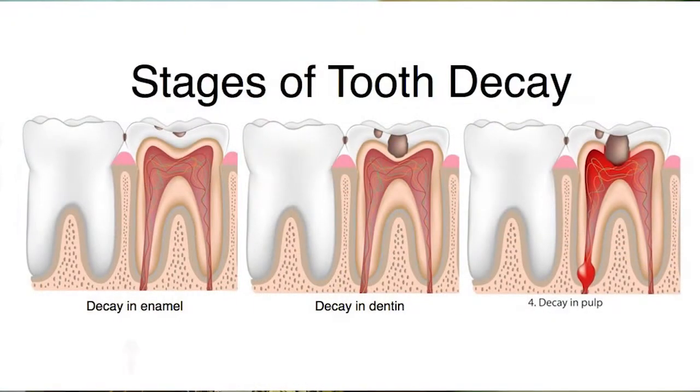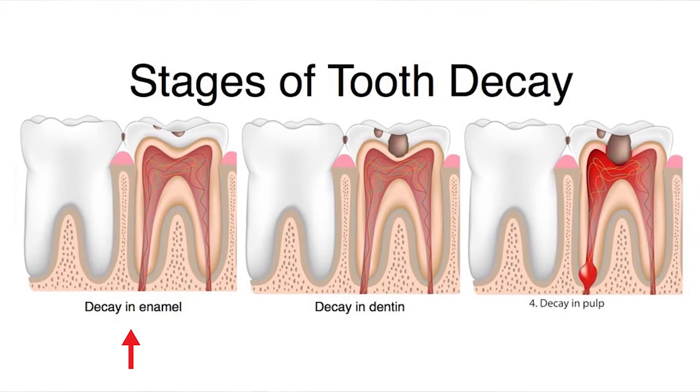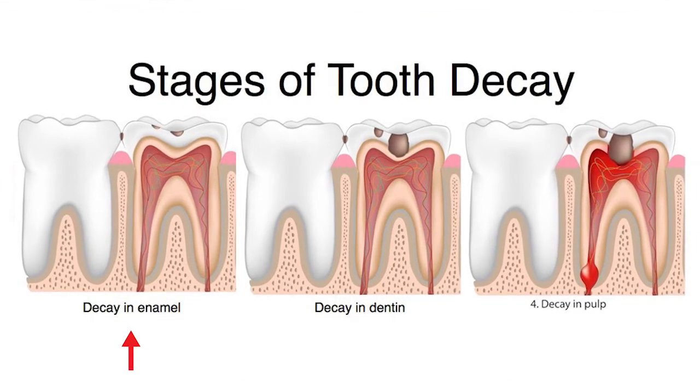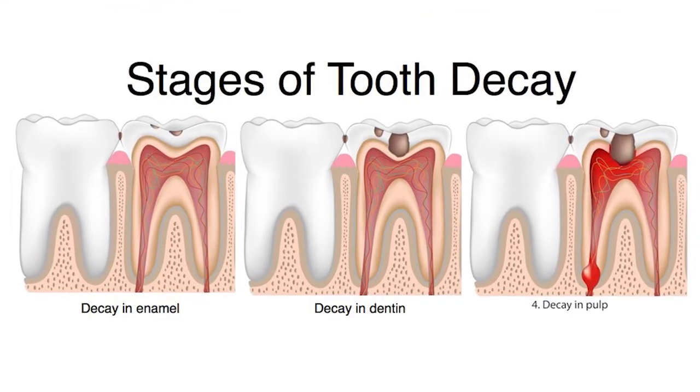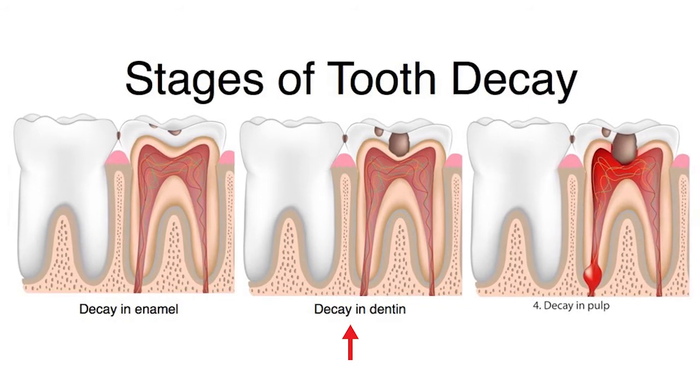The symptoms of tooth decay start with sensitivity — the tooth will begin to feel sensitive to cold or warm temperatures. There are actually three layers in a tooth. The top layer is enamel. While decay is still in the enamel layer, you will not feel anything. But when it progresses to the next layer, called dentine, you will start feeling sensitivity.